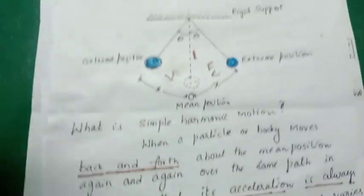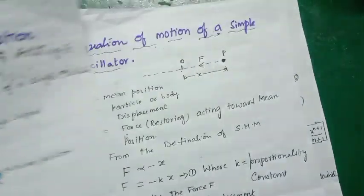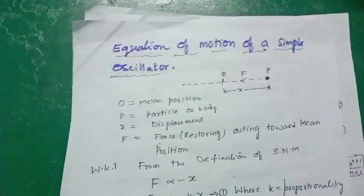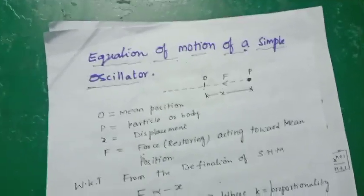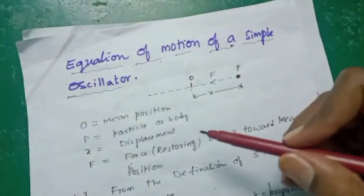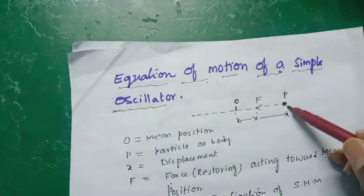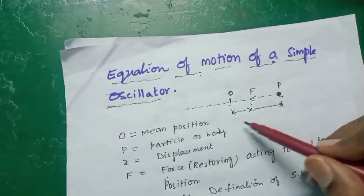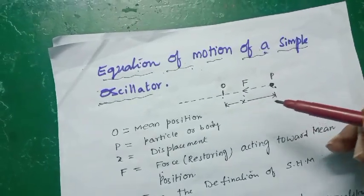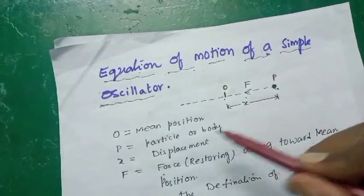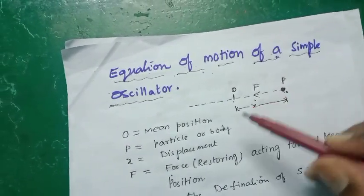Now let us derive the differential equation of a simple harmonic oscillator. In this simple diagram, the particle's mean position is O. We displace the particle through a distance x and release it. We know that it moves back and forth about the mean position, and the direction of the restoring force is acting towards the mean position.